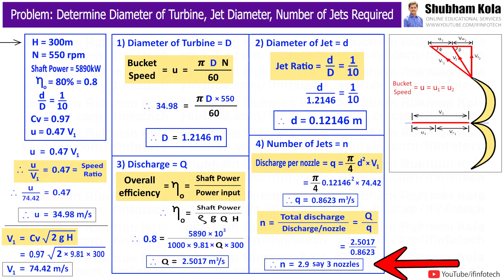Therefore, by calculating this, we got number of jets required as 2.9. So I will call it as 3 nozzles.